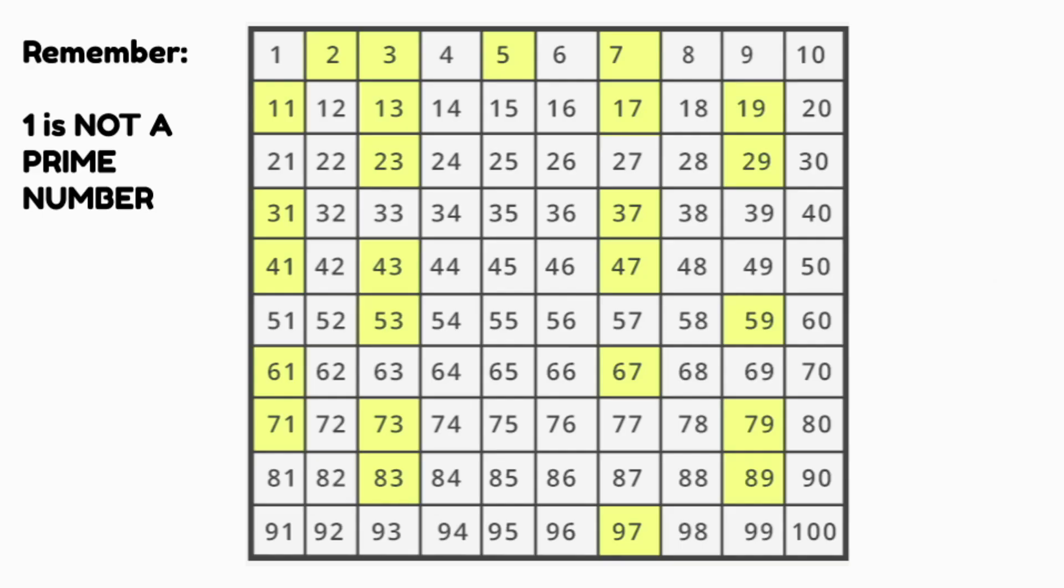We can take a look at this chart and see all the numbers up to 100 that only have two factors, themselves and one. These numbers are important and we call them prime numbers. It is important to note that one has only one factor and therefore is not a prime number.